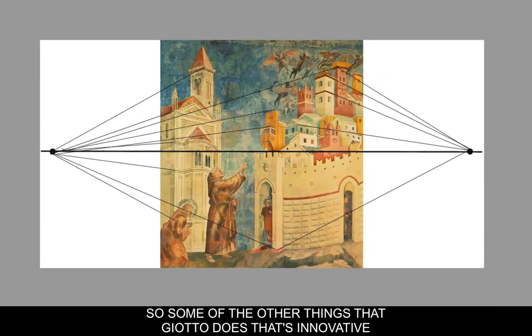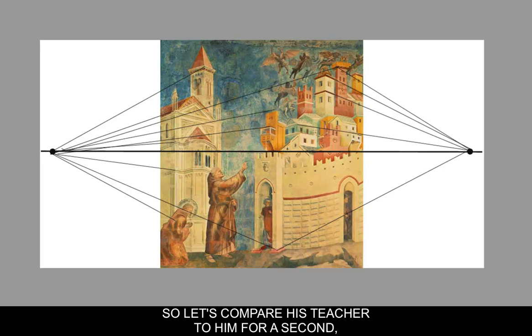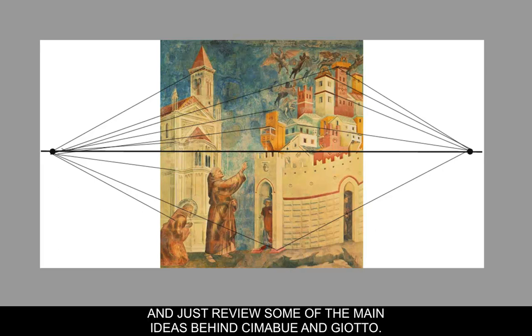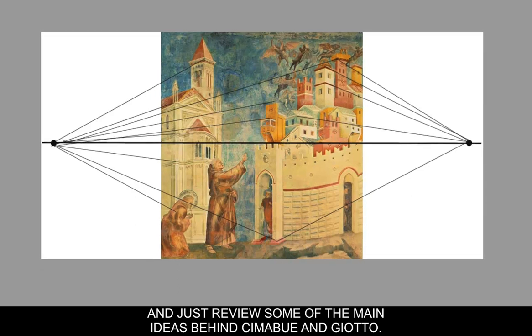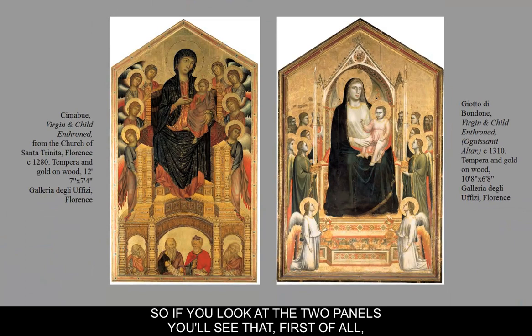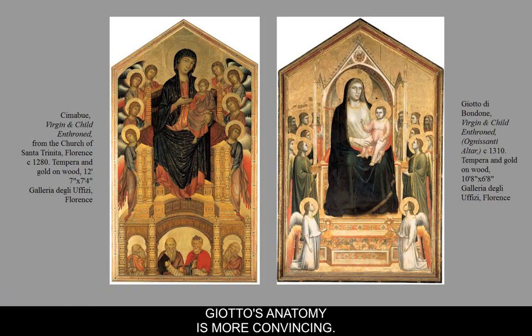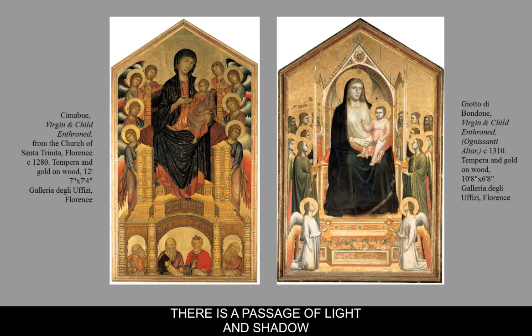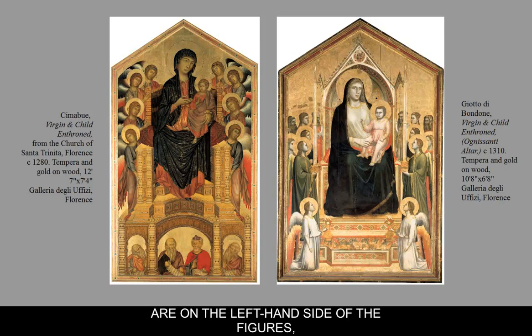Some of the other innovative things that Giotto does include using light and shadow. Let's compare his teacher to him and review the main ideas behind Cimabue and Giotto. Looking at the two panels, Giotto's anatomy is more convincing — you can see a true anatomy underneath the drapery. There is a passage of light and shadow from the upper right-hand corner to the left, where shadows in Giotto's painting are all on the left-hand side of the figures, while Cimabue doesn't have that.